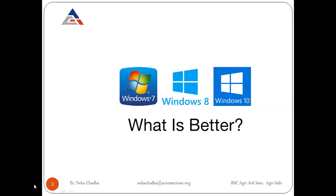Windows is basically called an operating system. We have two types of software: one is called system software, and the other is called application software. The operating system is called system software. Sometimes we use the word system software instead of operating system.